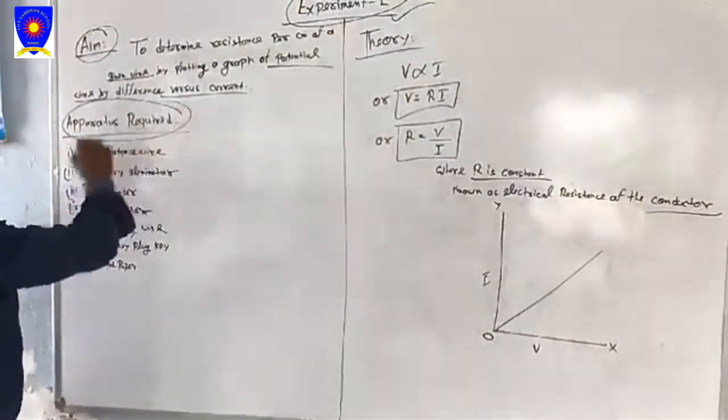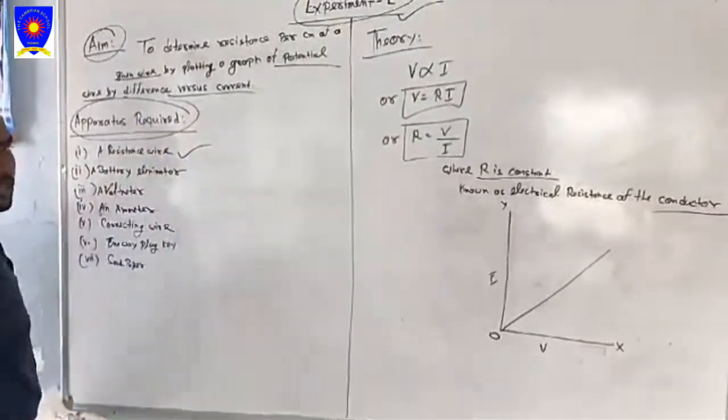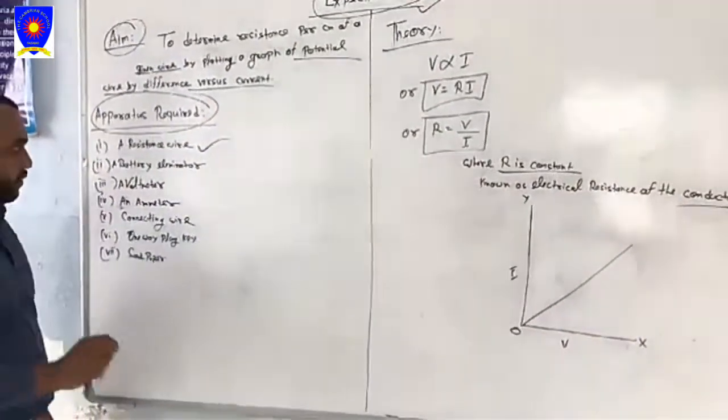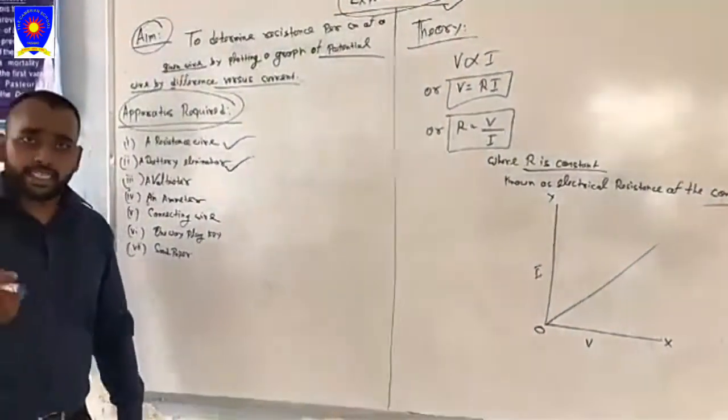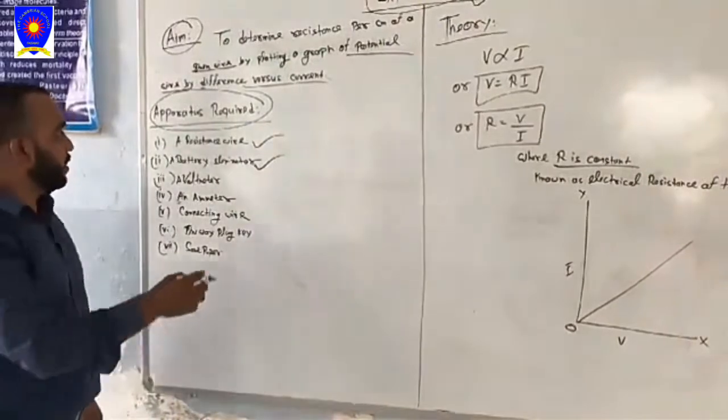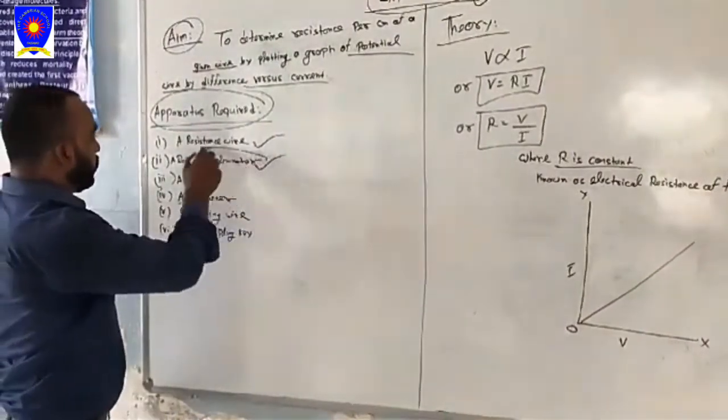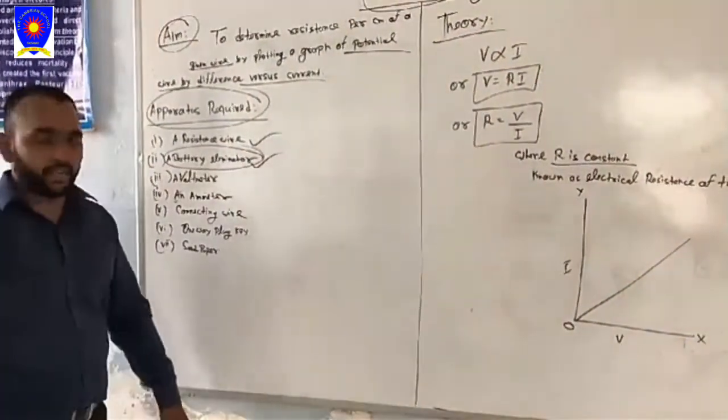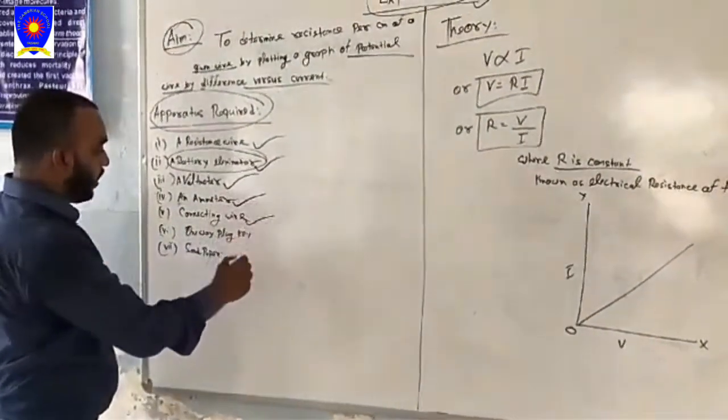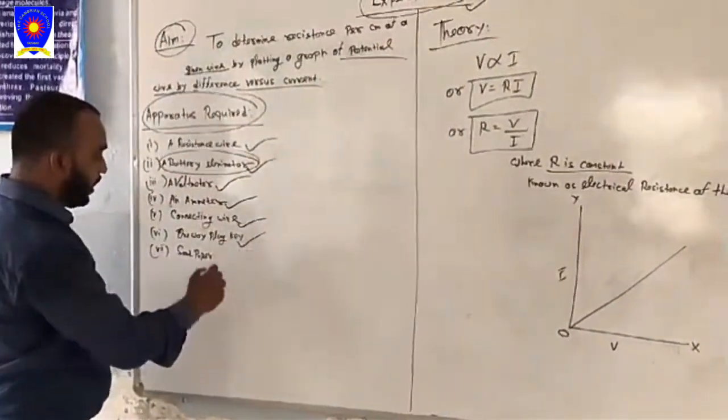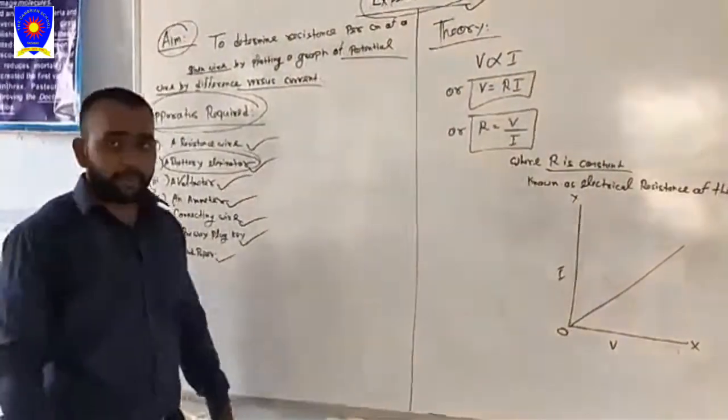Apparatus required for this experiment: a resistance wire, a battery eliminator - we can also use a DC cell or battery, but today we will use battery eliminator - a voltmeter, an ammeter, connecting wires, and one rheostat and slide meter.